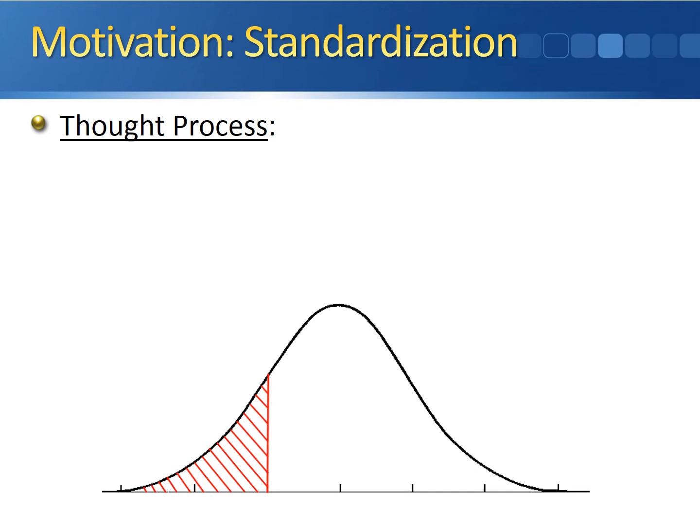Let's treat this normal distribution curve as a standard normal distribution. Since it's standard normal, it gets centered at zero. What we need to do is turn seven into a standard normal random variable. Here's the thought process behind it: seven is exactly three units less than ten.